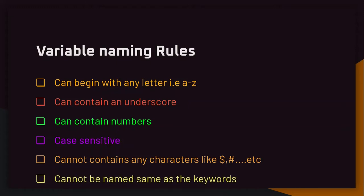Last but not least, you cannot name your variable the same as the keywords. In C# we have keywords used for special functions, and we can't use those as variable names — we'll discuss those keywords when we get to the coding side. When we get to the code, I'm going to show you how to declare a variable. I want you to play around with these rules — try starting with an underscore, a percentage sign, or a number, and explore.